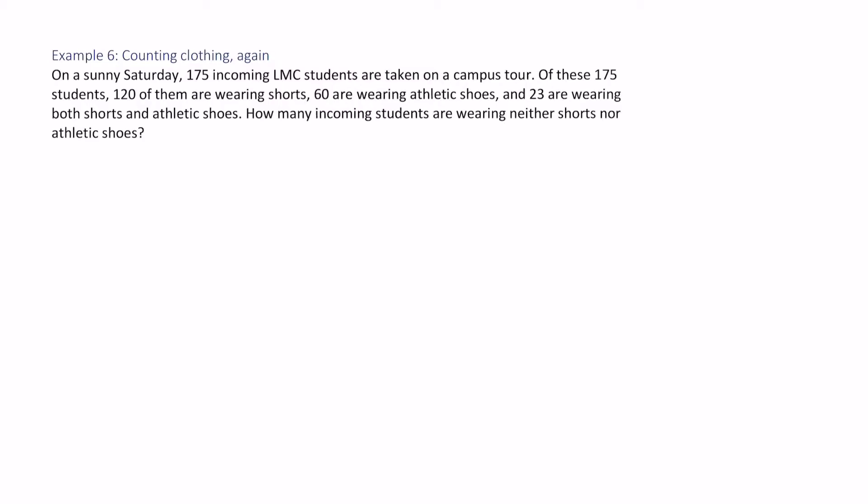This is a great example for a Venn diagram. Let's call S the set of students wearing shorts and A students wearing athletic shoes. Here is S, and we know the size of S has to equal 120.